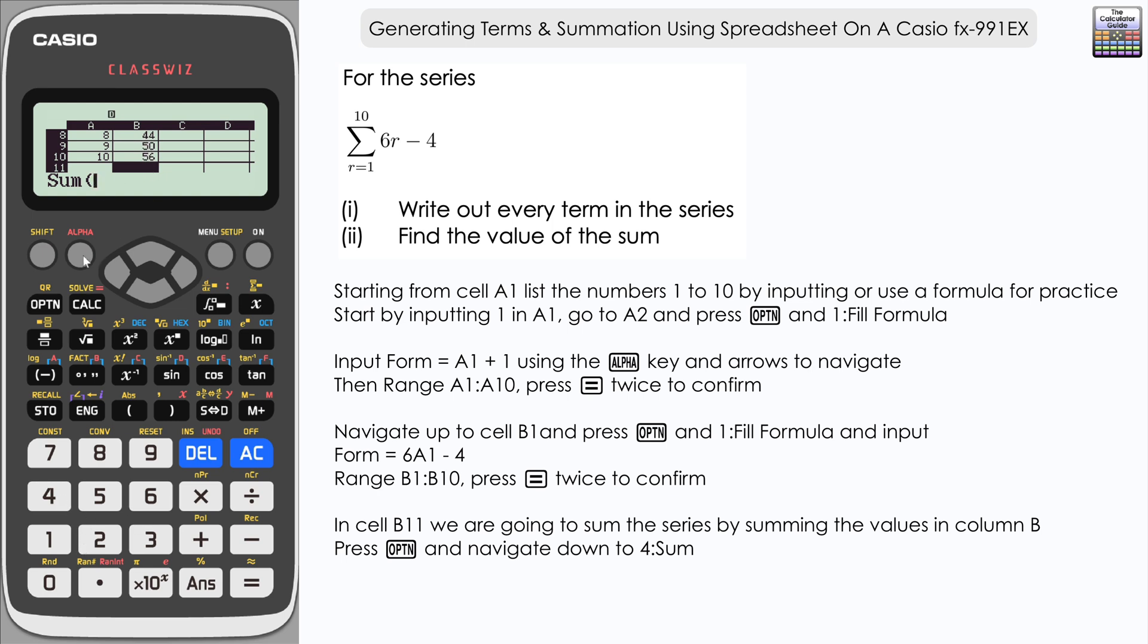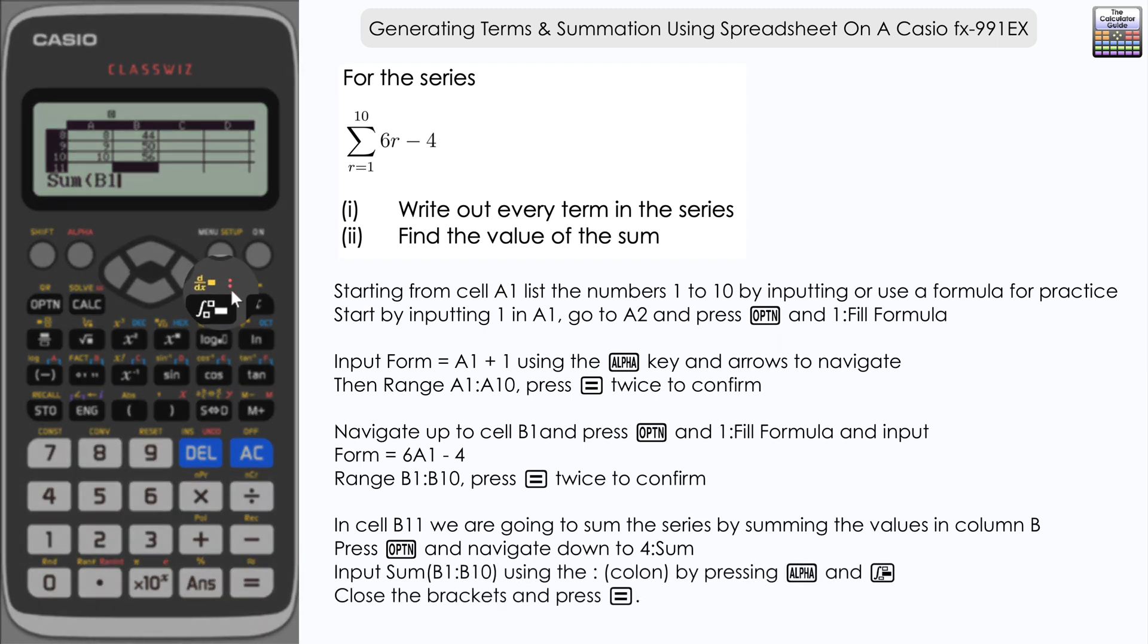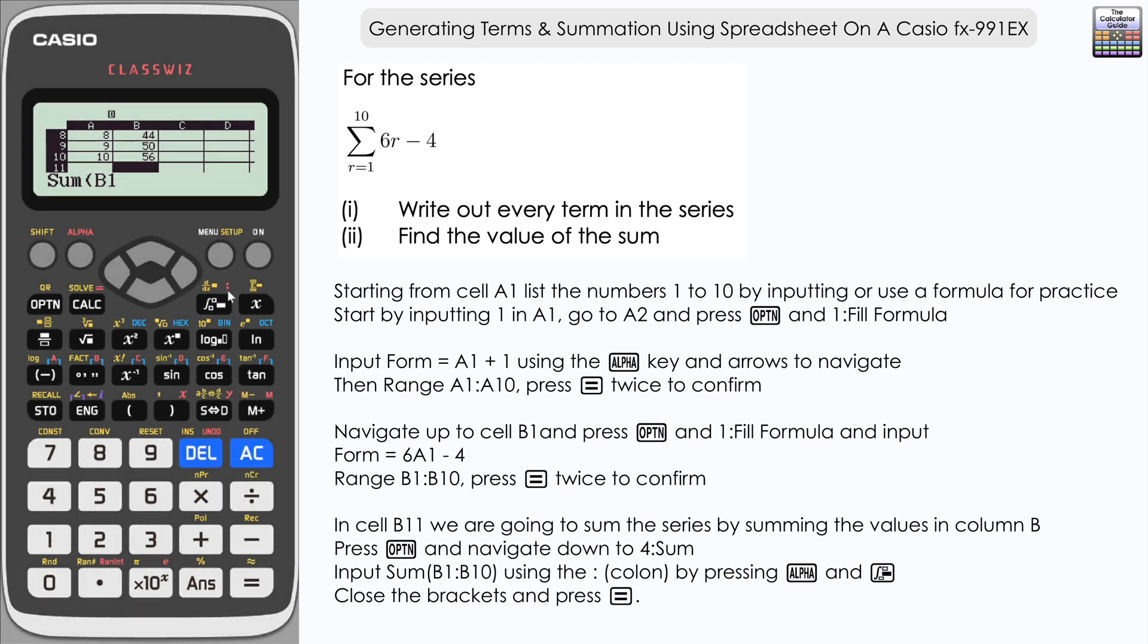Well our first value was in cell B1, so it's alpha and B1. Now to separate the start and end cell we need a colon, a colon here, so it's alpha and then, well, it's the integration button, you can see there's a red colon there, alpha and then colon. And then we want to define our final cell which is B10, close the brackets or parentheses and then press equals. And you can see here that we have the sum of the series, 290.